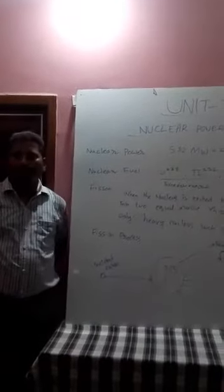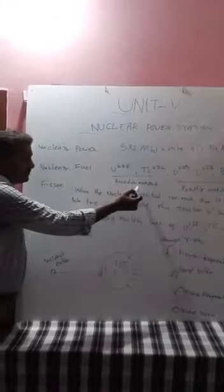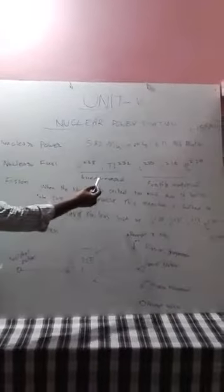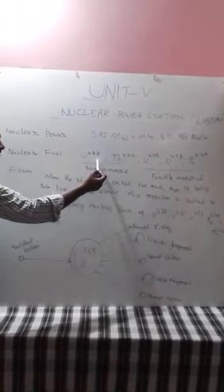Let us concentrate on nuclear fuel. Nuclear fuel is the nuclear material which has radioactivity. Examples of nuclear fuels are uranium-238, thorium-232, uranium-235, uranium-233, and plutonium-239. These nuclear fuels are of two types: breeder material and fertile material. Breeder materials are nuclear fuels which are directly available in nature. Fertile materials cannot be found naturally but can be produced from breeder materials.